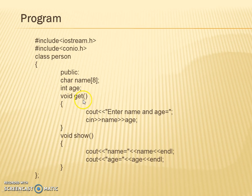We created a void function get() which will help us to take name and age from the user. The show() method is basically used for showing the content of name and age.